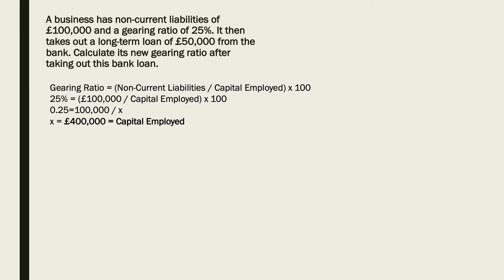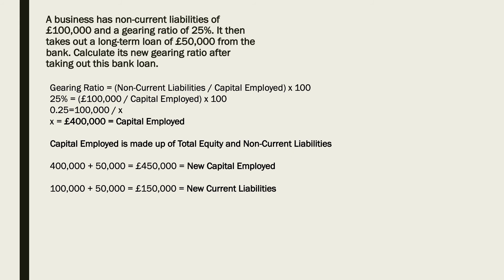Now remember, capital employed is made up of total equity and non-current liabilities. So we're going to calculate the new capital employed after taking out the bank loan. We know capital employed is £400,000, and we add on the new bank loan of £50,000. So the new capital employed is £450,000.